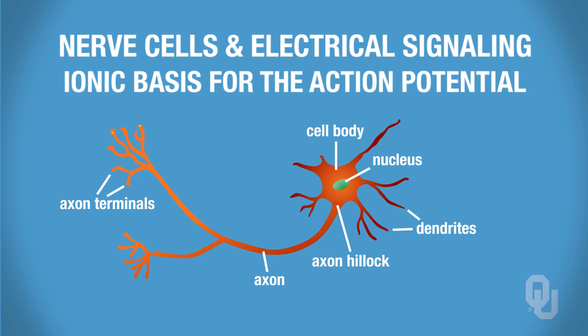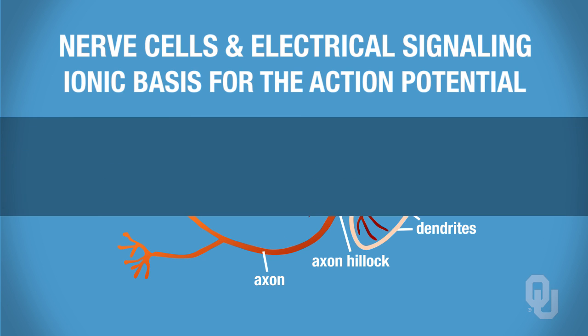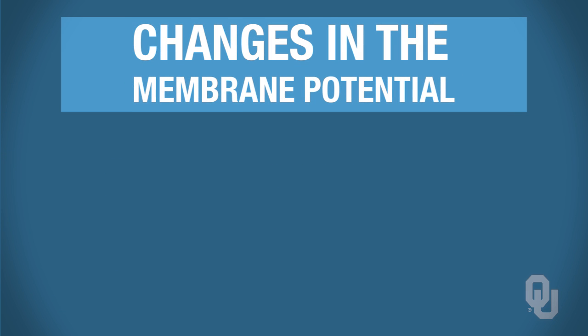Dendrites can generate graded potentials, cell bodies can generate graded potentials, and if those graded potentials reach the axon hillock, then we can generate an action potential. Before we begin, you should know some definitions and terminology in order to understand the phases of the action potential.